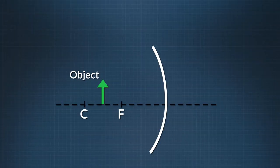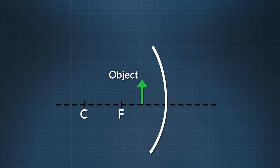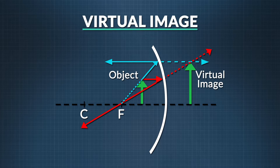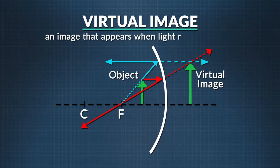Let's move our light between the focal point and the mirror. Now we have another type of image, called a virtual image. A virtual image is one that cannot be projected — it appears when the light rays converge behind the mirror. Where a real image is formed when light rays converge on a surface, a virtual image is formed where they only appear to converge on the surface of the mirror. Notice the virtual image is right side up and magnified.